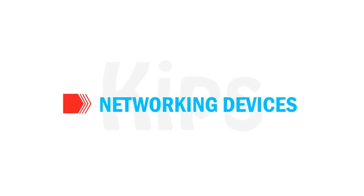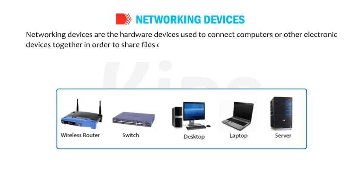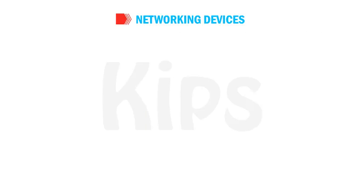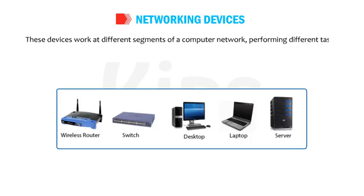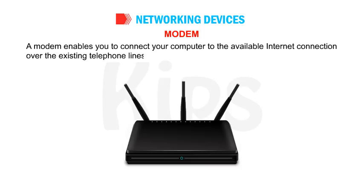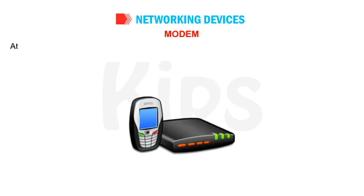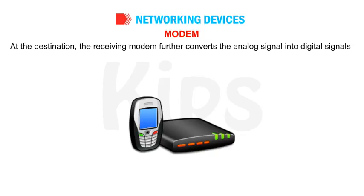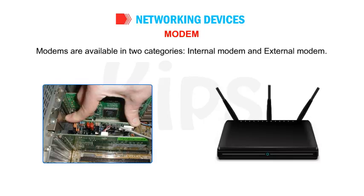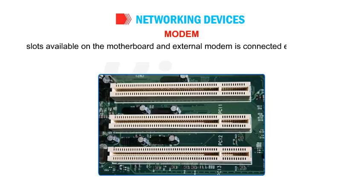Networking devices are hardware devices used to connect computers or other electronic devices together in order to share files or resources like printers or fax machines. These devices work at different segments of a computer network, performing different tasks. Modem: A modem enables you to connect your computer to the Internet over existing telephone lines. It converts the digital signals of a computer into analog signals for transmission via phone lines. At the destination, the receiving modem converts the analog signal back into digital signals. Modems are available as internal modem, installed on the PCI slots on the motherboard, or external modem, connected externally to a computer.